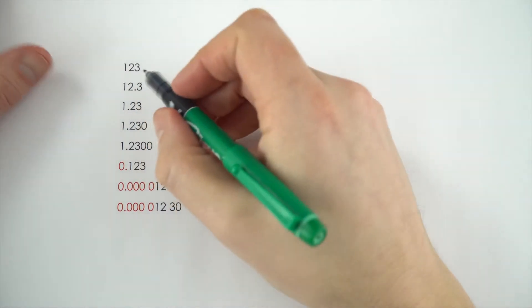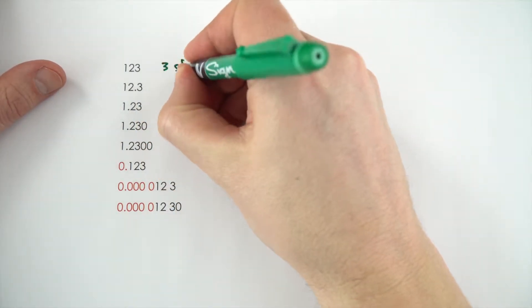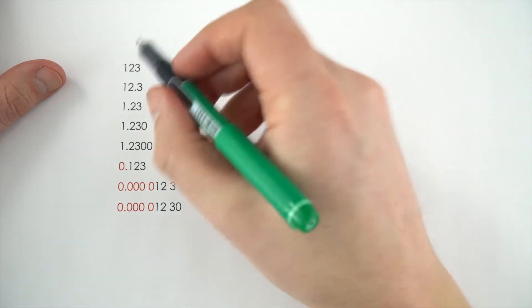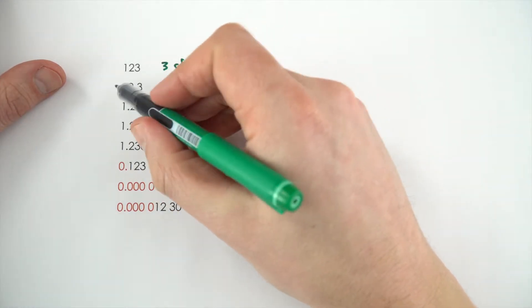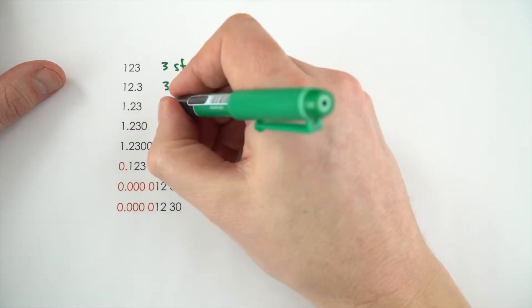So, here's a list of a few numbers. Now, the first one, 123, is given to three significant figures. So I'm just going to put 3SF at the top there. Now, this one here, 12.3, again there's three numbers here, so this one is three significant figures, as is 1.23.